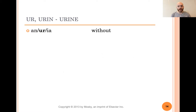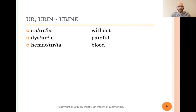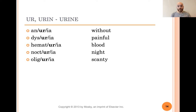Words with ur and urine: anuria means without urine — so maybe a person with kidney problems would have anuria; they wouldn't be producing as much urine or any urine at all. Dysuria means difficult or painful urination. Hematuria means blood in the urine. Nocturia means nighttime urination — like kids when they're young often wet the bed, so that's nocturia. Oliguria means scanty or just a little bit of urine. Pyuria — py means pus, so this stands for pus in the urine. You don't want that.